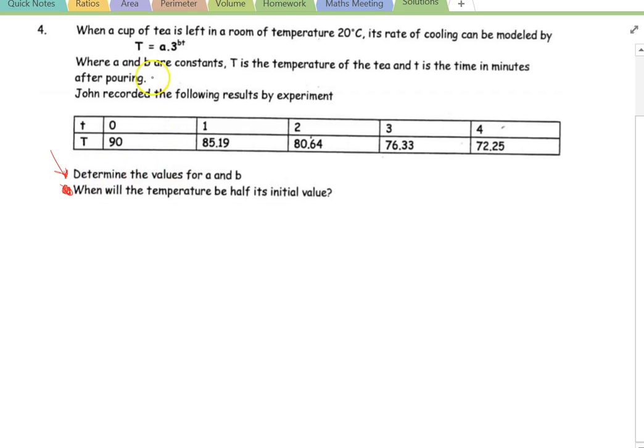So, determine the values for A and B. This function looks a lot like what we've done before, T equals A times B to the X, let's say, but it's got another value, it's not just X, it's BX or BT, whatever it might be.